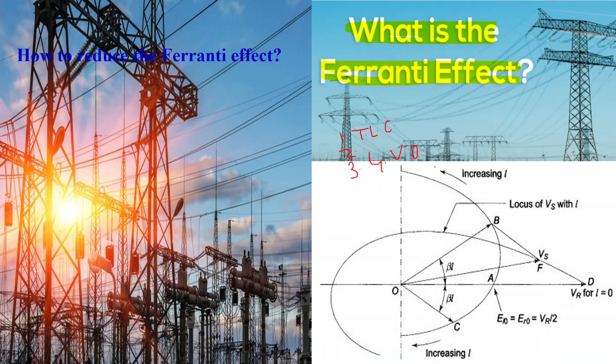Ninth, impact on equipment. The Ferranti effect can lead to over-voltage conditions at the receiving end of the transmission line, which may exceed the designed voltage limits of the electrical equipment connected to the grid. This can potentially damage or disrupt the operation of sensitive equipment such as transformers, motors, and electronic devices.